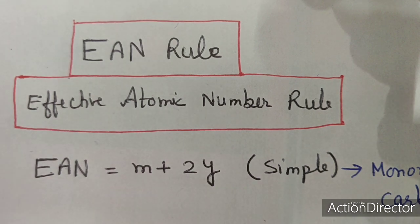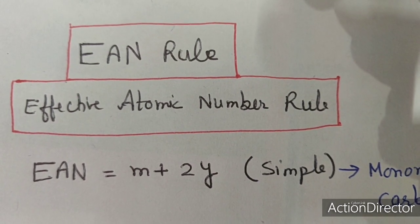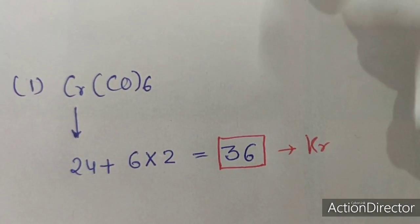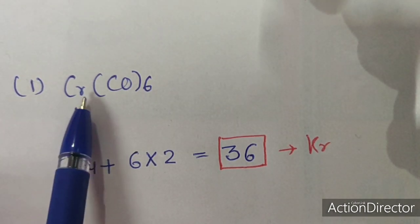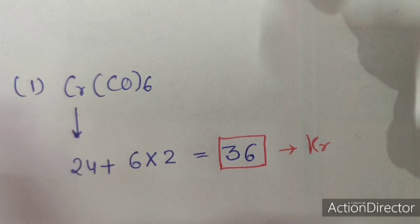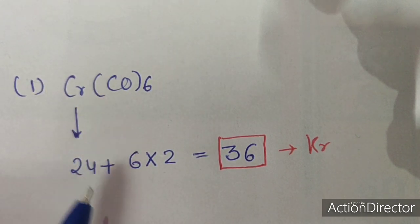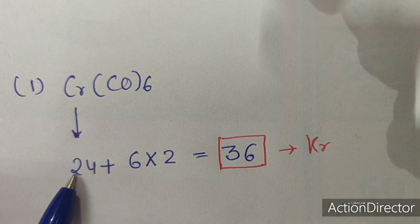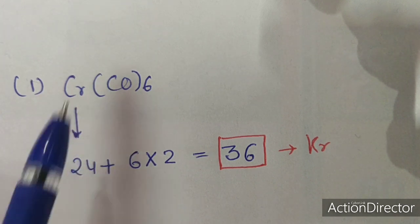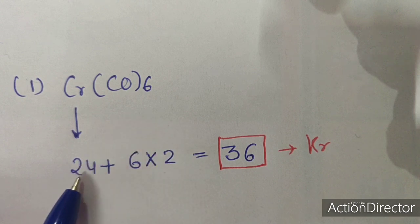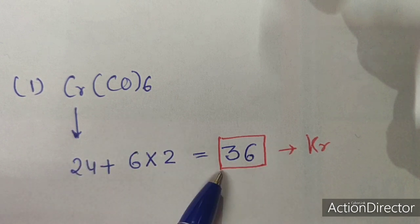With the help of examples, I will help you calculate the EAN of different carbonyl compounds. The first case is mononuclear carbonyl CrCO6. Chromium's atomic number is 24, and there are 6 ligands, which donate 12 electrons. So 24 plus 12 equals 36.